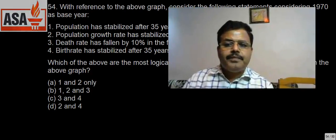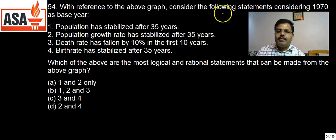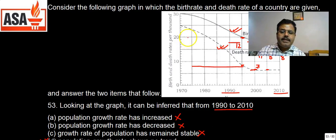Question number 54. With reference to the above graph, consider the following statements considering 1970 as base year. Statement 1: Population has stabilized after 35 years. Let us see whether the population is stabilized after 35 years. 35 years means 2005.